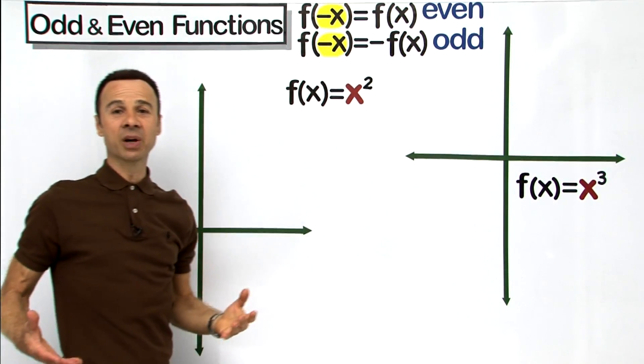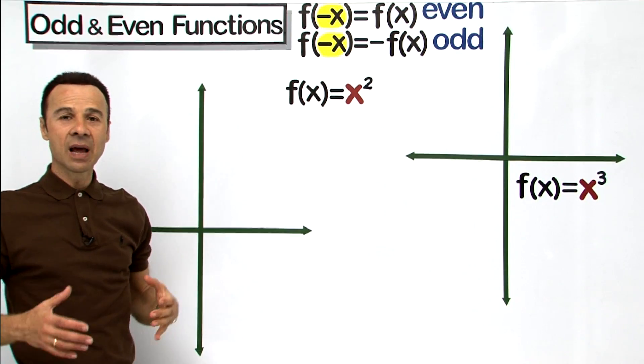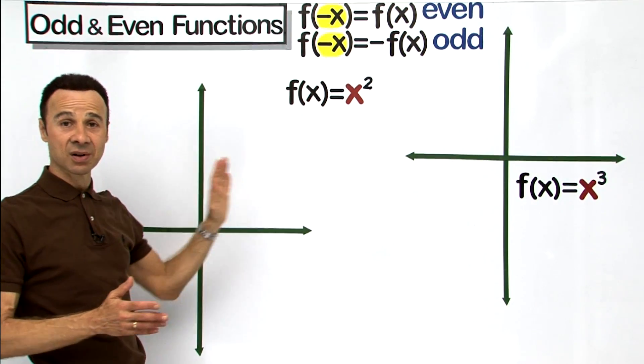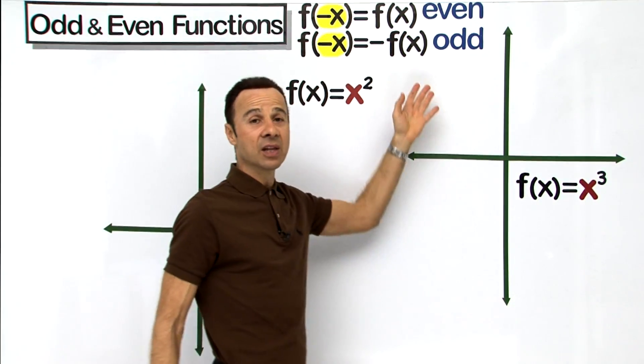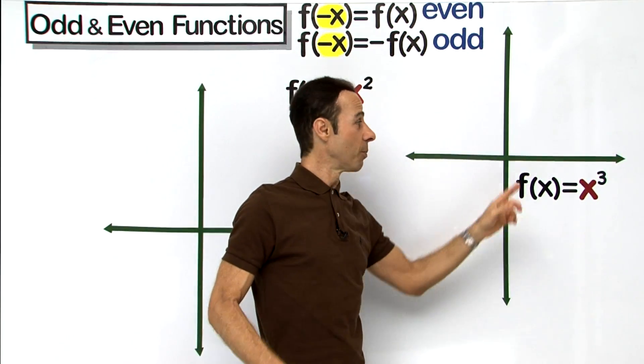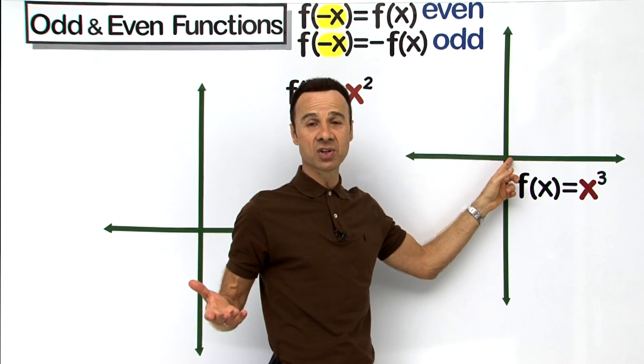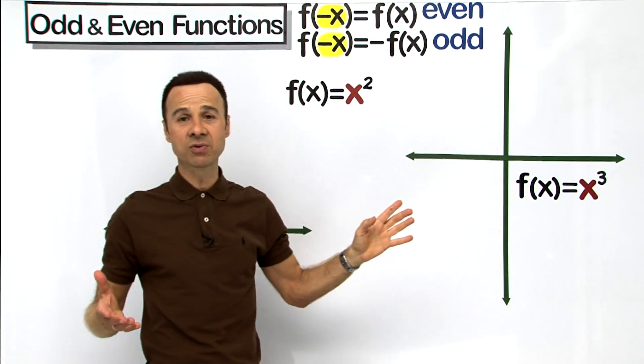So what does that mean? Well if it is going to be even, it is going to have symmetry about the y-axis, it is going to be reflected in the y-axis. If it is going to be odd, it is going to have symmetry about the point called the origin, between two quadrants.